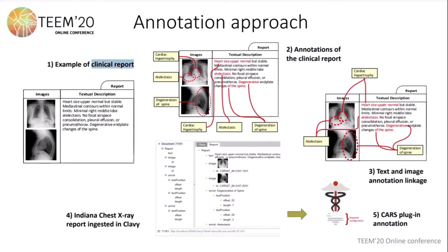In the next slide I will structure the proposed annotation approach in five steps. First, we define a clinical report as a basic structure of images and textual description where the main findings of the report are written down. The second step is about annotations, traditionally separated into text annotation and image annotation with regions of interest. The main contribution is how to link both the textual description and the regions of interest in the medical images through a common annotation.